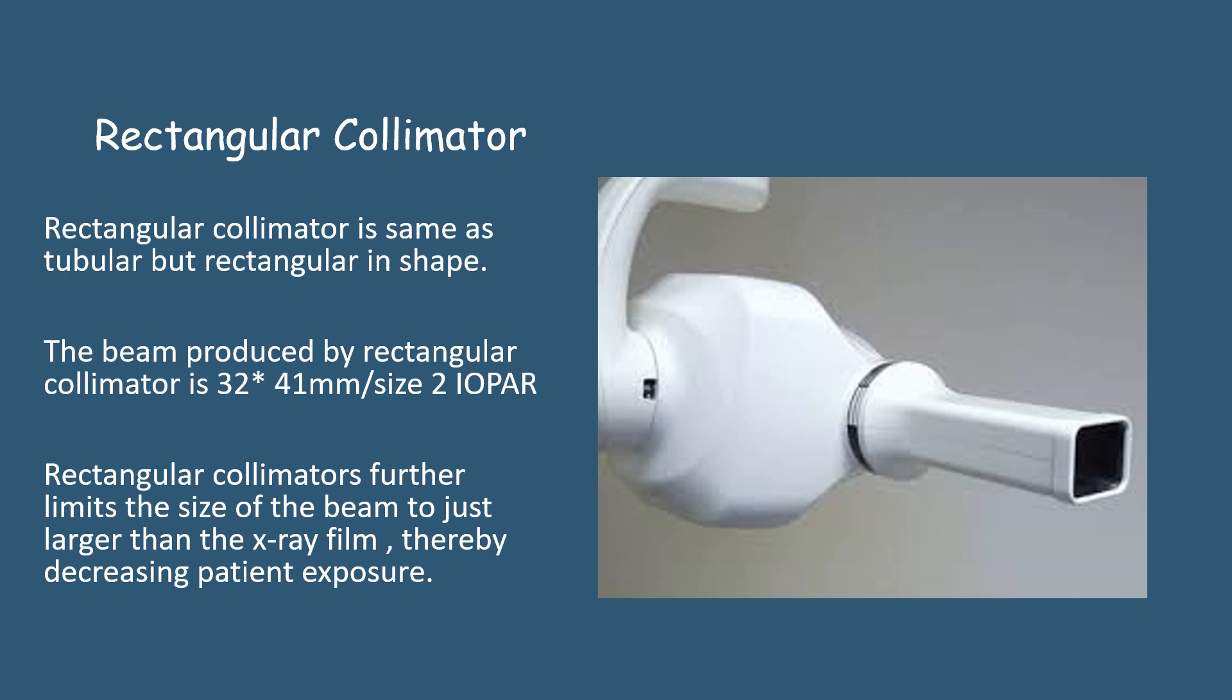So the next is rectangular collimators. Rectangular collimators, they are same as tubular, just rectangular in shape. The beam produced by them are 32 x 41 mm or the size 2 IOPAR.